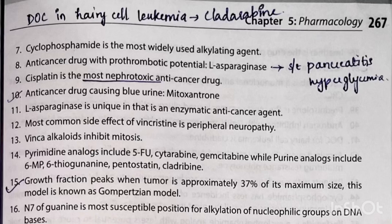Vinca alkaloids inhibit mitosis. Pyrimidine analogues include 5-fluorouracil, cytarabine, and gemcitabine, while purine analogues include 6-mercaptopurine, 6-thioguanine, pentostatin, and cladribine. Growth fraction peaks when the tumor is approximately 37 percent of its maximum size; this model is known as the Gompertzian model.